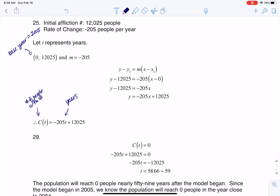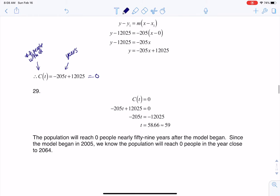All right, so with all of that, basically what I want to do for 29 is just set this thing equal to 0. When's the output 0? So as we do that, we go ahead, we solve for t, and we get t being about 58.66, but I'm going to just round that to the nearest year.